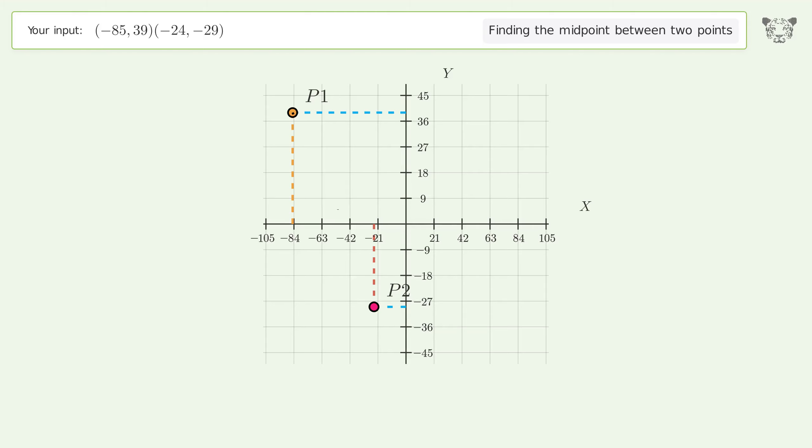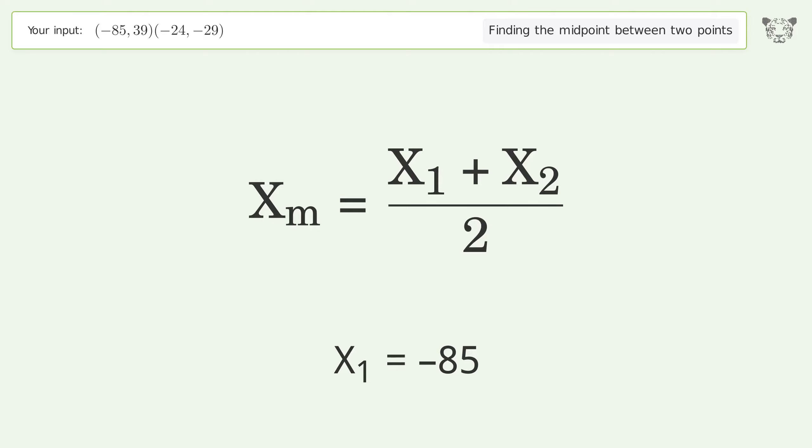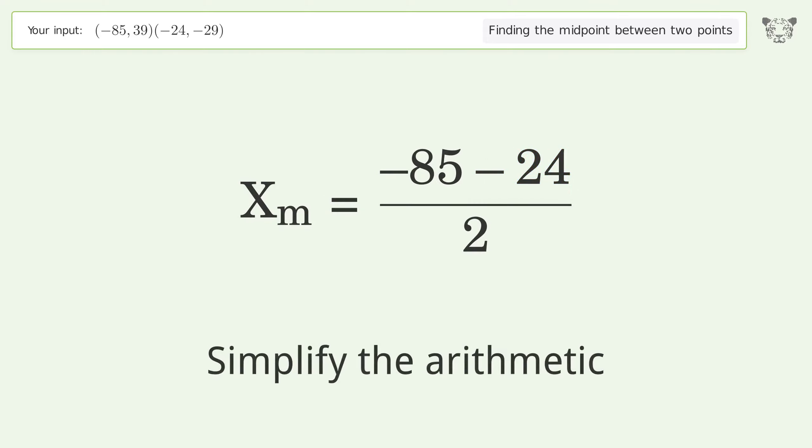Use the x values in the midpoint formula to find the midpoint x. x1 equals -85, x2 equals -24. Simplify the arithmetic.